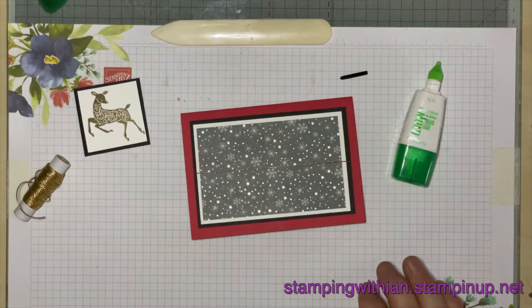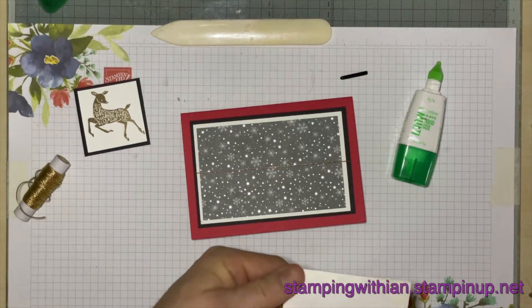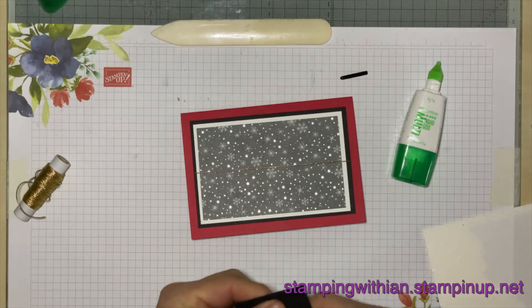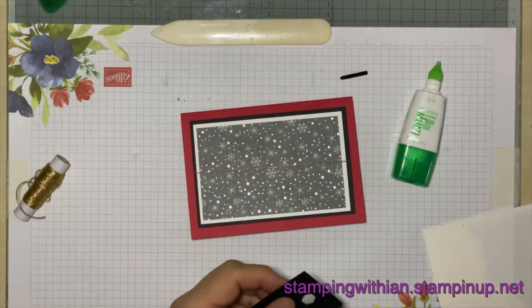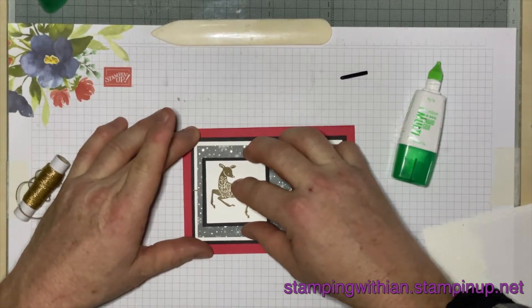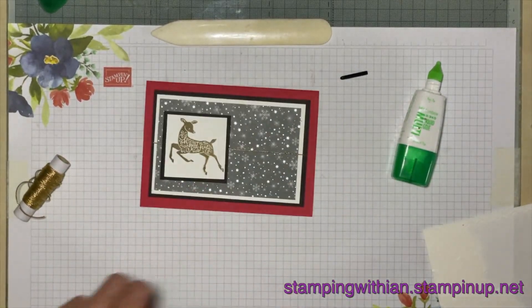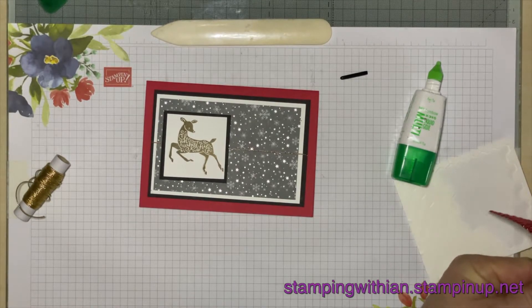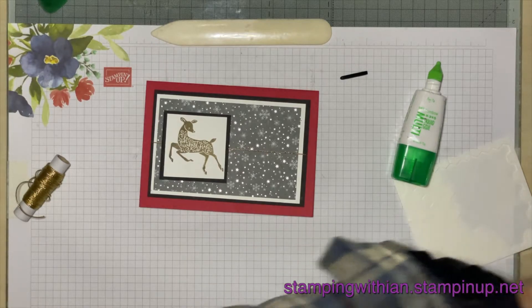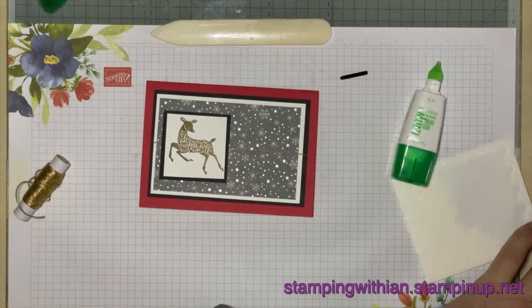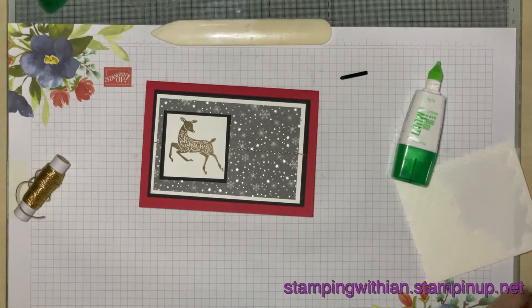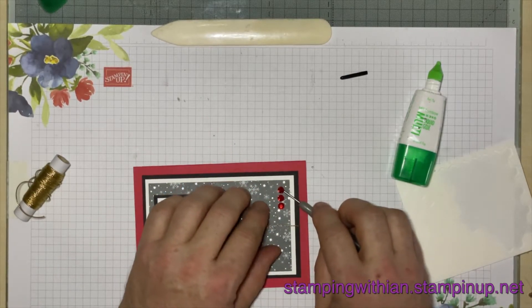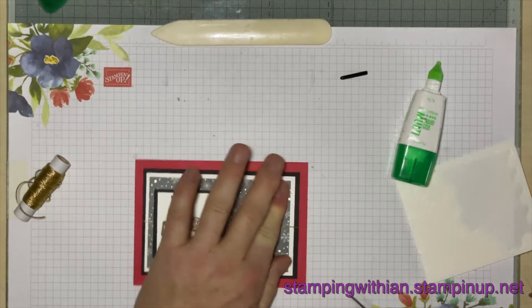Get some dimensionals. Just a couple. Yeah. It's only a bit of card. You're not holding up the Forth Bridge or anything. That goes there. Kind of roughly same kind of distance away. Yeah. Get some embellishments. Three. It's always nice to have an odd number. Don't you find?